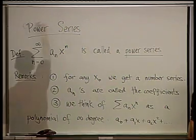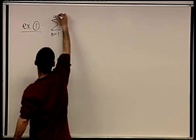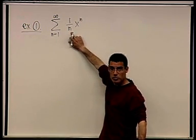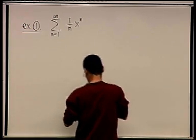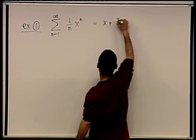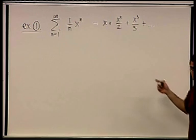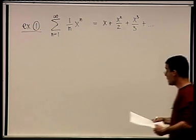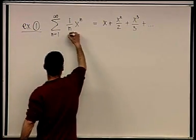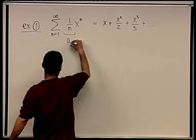Example 1: sigma from n=1 to infinity of (1/n) * x^n. I start from 1 because starting from 0 would be undefined. Spelled out: x + x²/2 + x³/3 + ... The coefficients a_n are 1/n. Let's start plugging in numbers. If we plug in x_0 = 0, we get a sum of zeros, which is 0, and it converges.